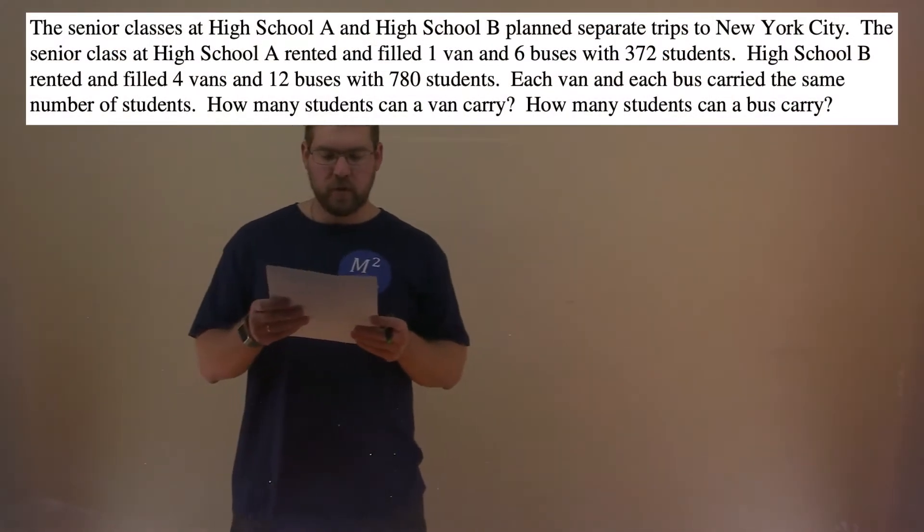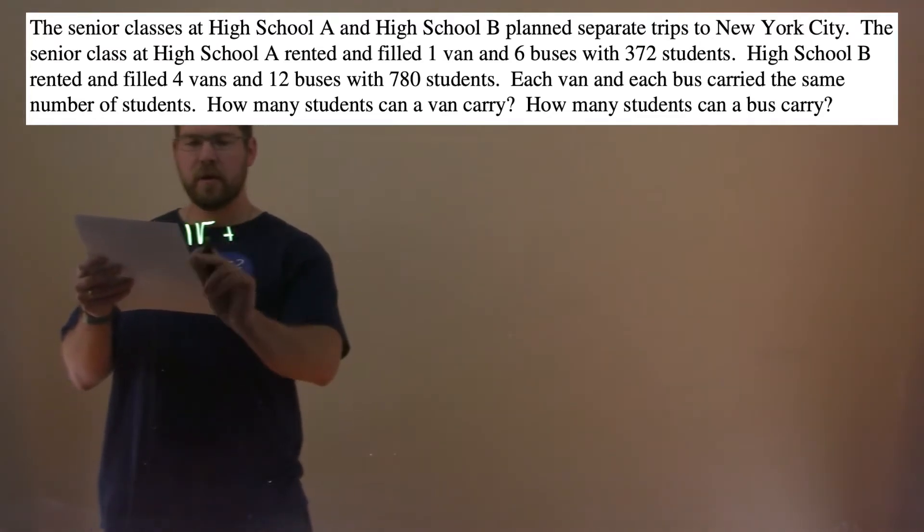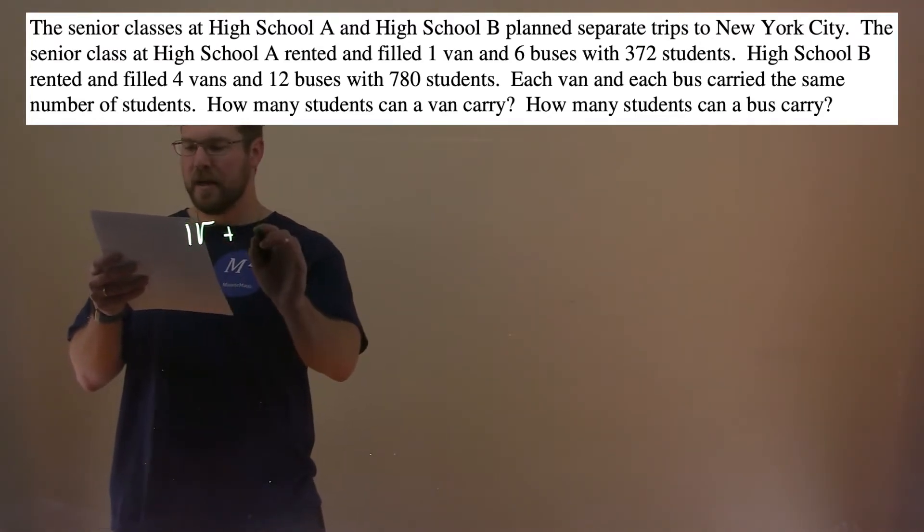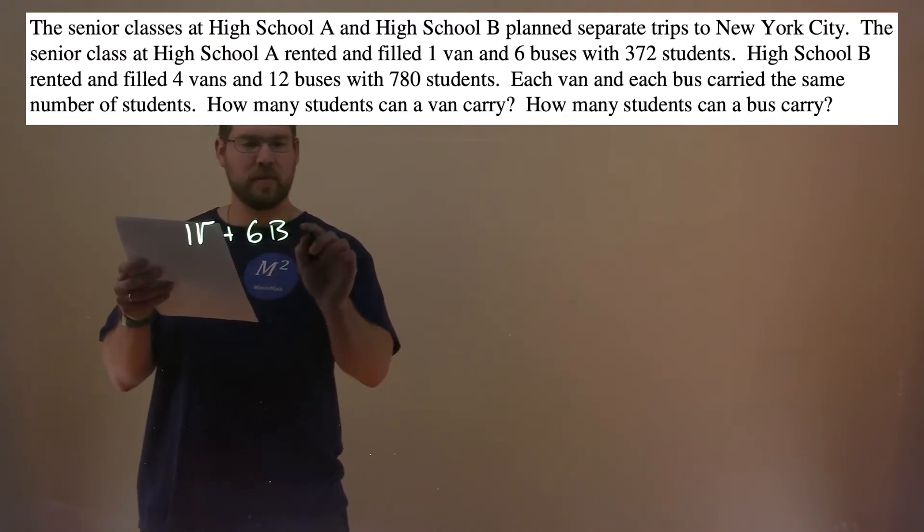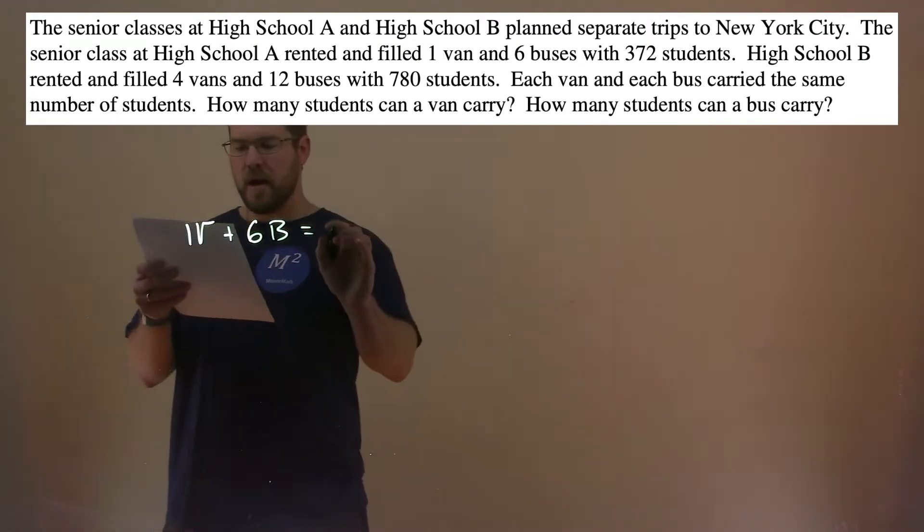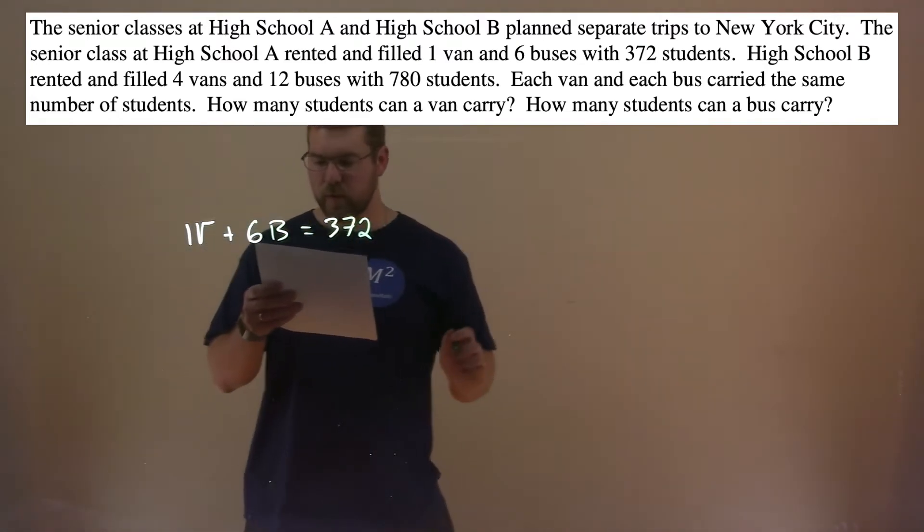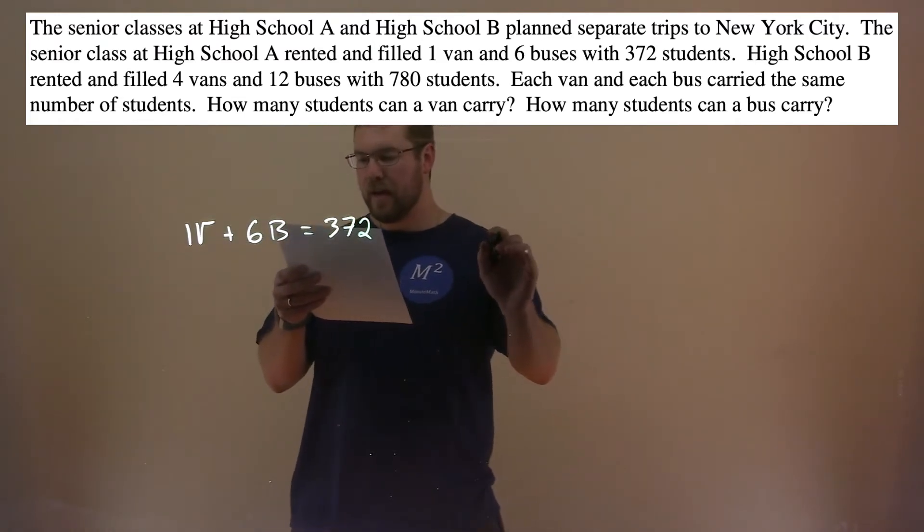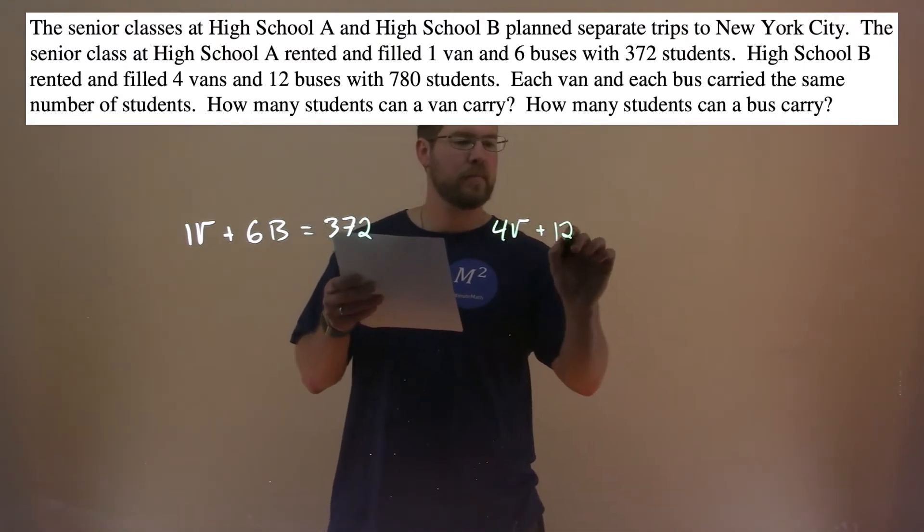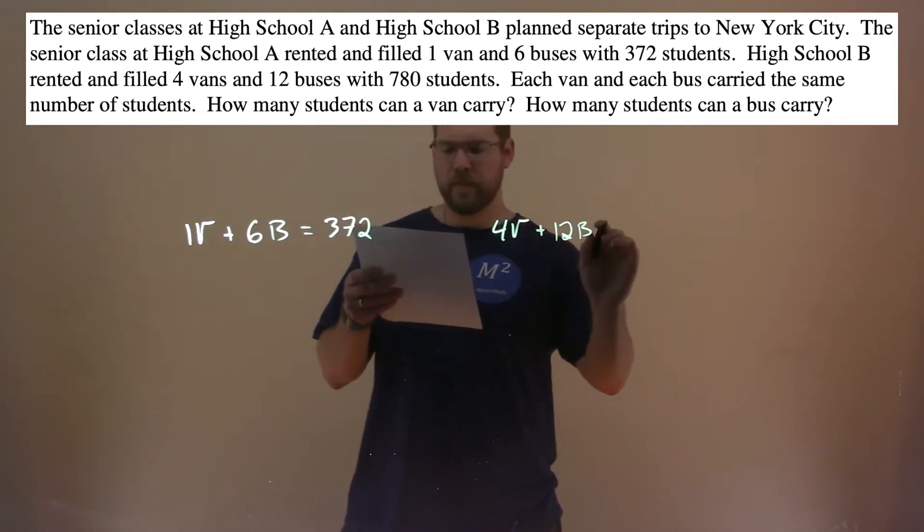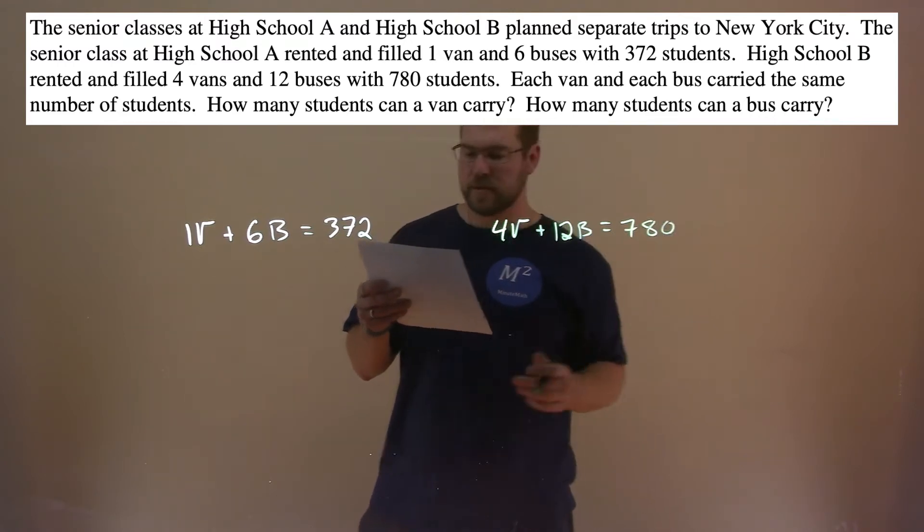Alright, so the first high school filled one van and six buses, so 1V plus 6B, with B being the number of students in a bus and V being the number of students in a van, for a total of 372 students. High School B had four vans, so 4V, plus 12 buses, and that equals 780 students.